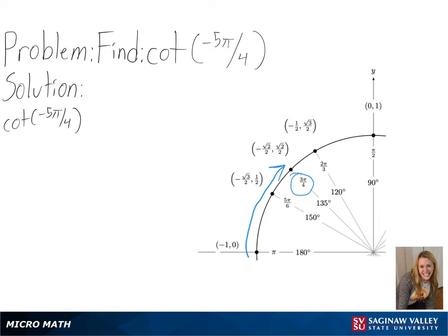Since we are finding the cotangent value, we will need to find the cosine value over the sine value, or the x over y value, since that will give us our cotangent value.